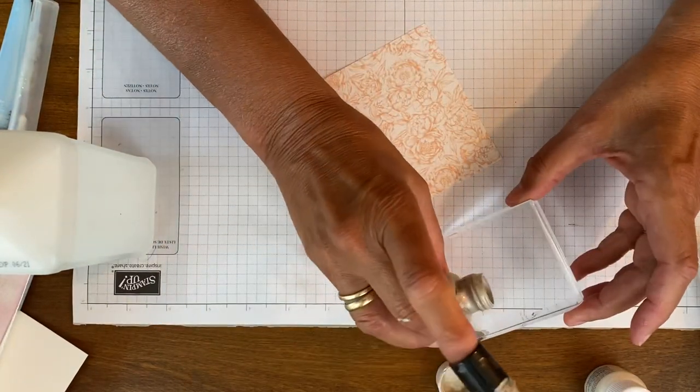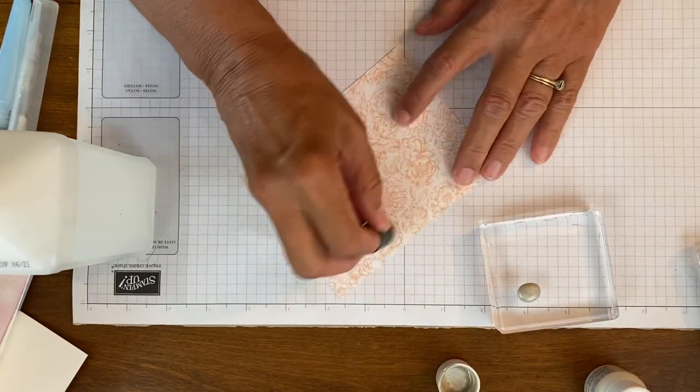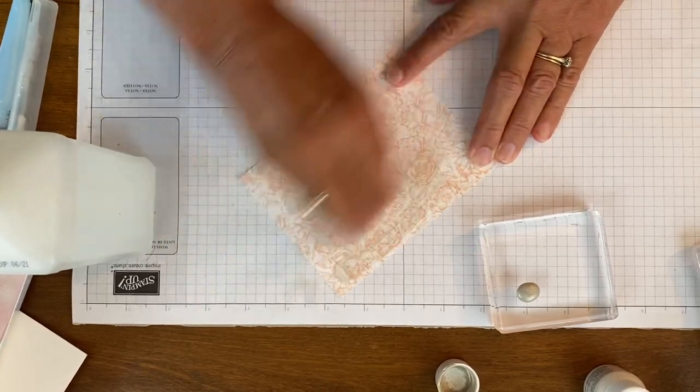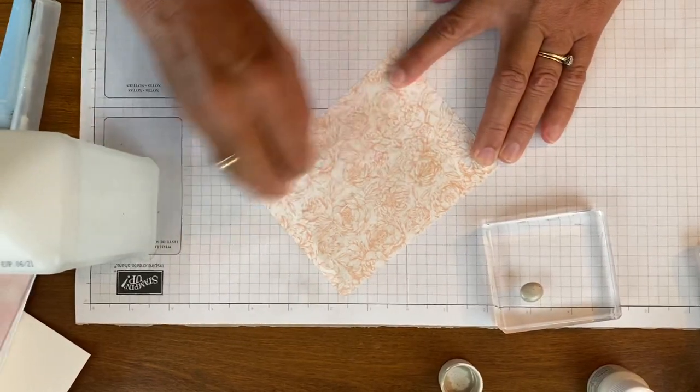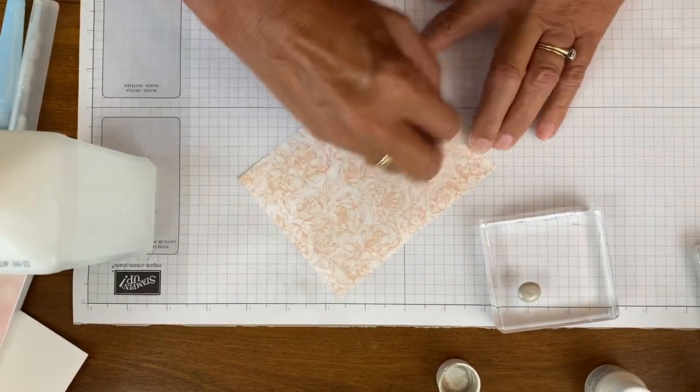Or I pour a little bit on a stamping block right here. Now the first thing I'm going to do is turn my paper, my patterned designer series paper into shimmer paper.